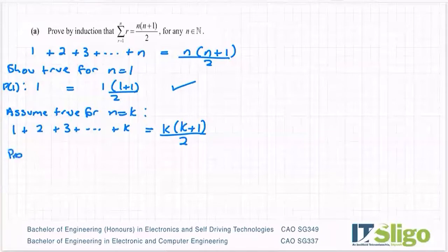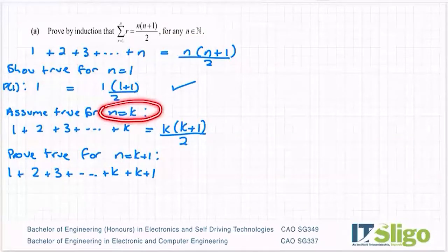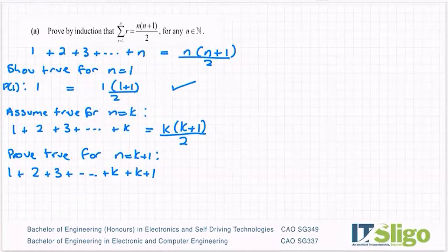And now step three, you must prove true for n is equal to k plus 1. So on my left hand side, that would look like 1 plus 2 plus 3 plus dot dot dot plus k plus k plus 1. We're showing it true for the lowest one, n is equal to 1. We're then assuming it's true for a random value in the middle, n is equal to k. And then we're proving it true for one value up from k, which is k plus 1.